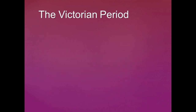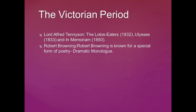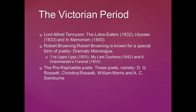The Romantic age is followed by the Victorian period, which is from 1837 to 1901. Lord Alfred Tennyson is a typical representative Victorian poet who wrote beautiful poems like The Lotus Eaters, Ulysses, and In Memoriam. Along with Tennyson, we have Robert Browning, who is very famous for dramatic monologues. Fra Lippo Lippi, My Last Duchess, and A Grammarian's Funeral are typical of Browning's poems.